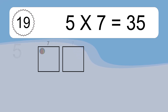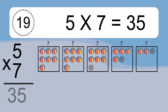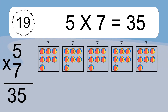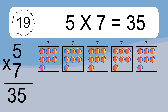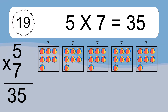5 times 7 equals what? 5 times 7 equals 35. We have 5 boxes, and each box has 7 colorful balls inside. If you count all the balls in all the boxes together, you will have 5 times 7 balls. This equals 35 balls.